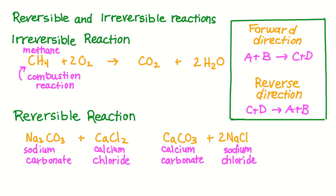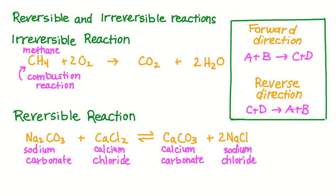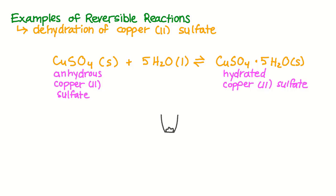We can indicate a reversible reaction in our chemical equation by using two single-headed arrows. So what makes it so reactions can sometimes go in the forward direction and other times go in the reverse direction, like Bertollet saw with his reaction? Well, it turns out that changing the conditions that a reaction is reacting under can sometimes cause a reaction to reverse. To get a feel for this, let's take a look at some classic examples of reversible reactions.